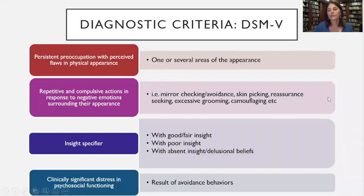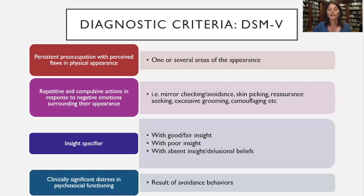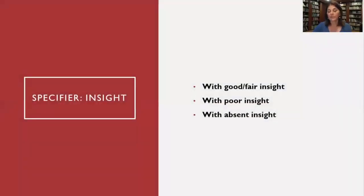We have a diagnostic criteria called the DSM-5, which allows us to evaluate whether someone has BDD or not. One of the things we're looking at is whether an individual is obsessed with their appearance, whether they engage in certain compulsions, because currently BDD is under the category of OCD and related disorders. So there's obsessions, compulsions, and sometimes avoidance of various situations. We have a specifier which has been added — does the individual have good insight, poor insight, or absence of insight?